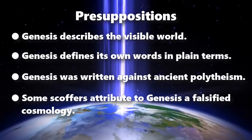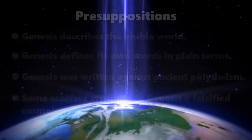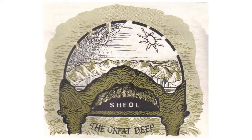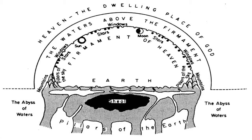Some scoffers attribute to Genesis a falsified cosmology. In our schools they taught us a contrived Hebrew cosmology that has a firmament — a solid sky or dome with holes in it to let rain fall to earth. However, that cosmology has two main problems. First, the Hebrews never believed in such a scheme. And second, the language of Genesis 1 and 7 does not describe such a scheme.